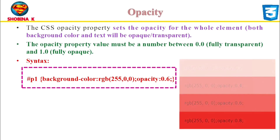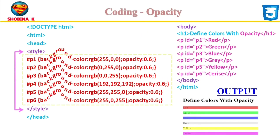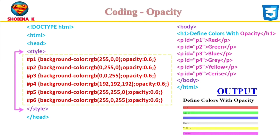The CSS opacity property sets the opacity for the whole element — that is, you can set the transparency and opacity for both the background color and text. Opacity is like a thinner paint. The opacity property value must be a number between 0 and 1, where 0 is fully transparent and 1 is fully opaque. It allows you to specify the level of opacity against an object so that it becomes semi-transparent or even fully transparent. In the example, the opacity property adds transparency to both the background element and text, which can make the text hard to read. To avoid applying opacity to the text, you can use RGBA color values, which will set the opacity for the background color but not for the text.